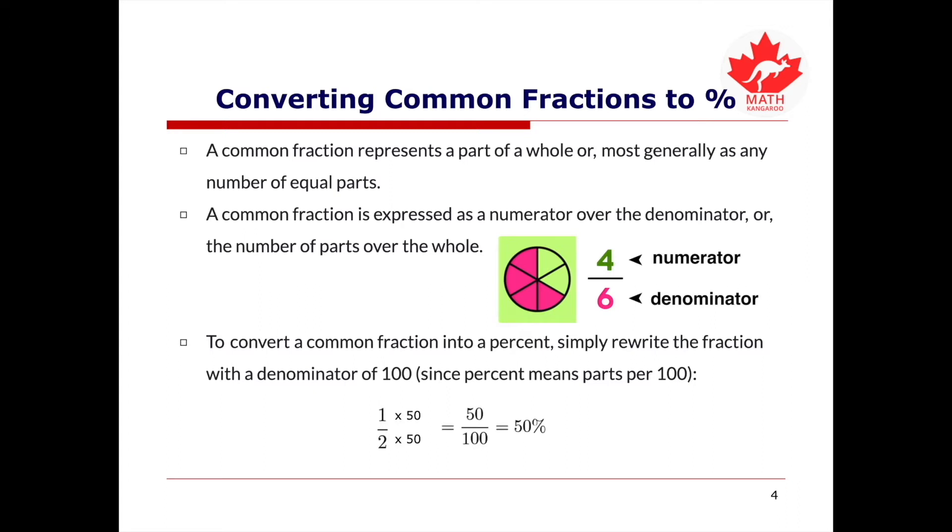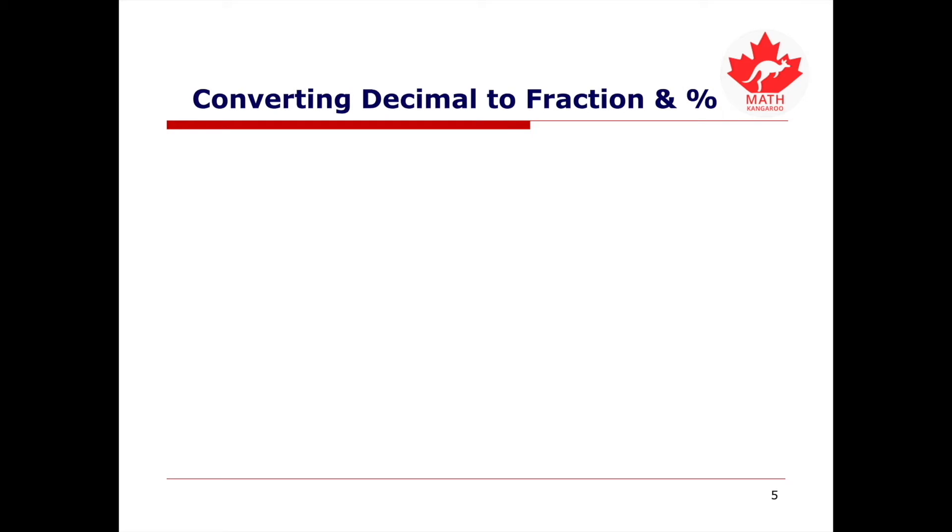For instance, if we have a fraction 1 over 2, and we want to convert it into percent, the first thing we're going to do is we want to convert the denominator into 100. So we can multiply both the numerator and the denominator by 50, therefore, 1 half is equal to 50 over 100, and that's equal to 50%. Therefore, 1 over 2 is equal to 50%.